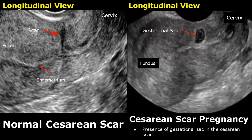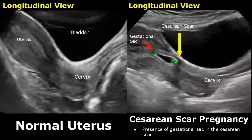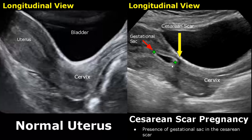Caesarean scar pregnancy is very rare. It is a type of ectopic pregnancy, but it is not an accurate term because the gestational sac is still implanted within the uterus. The gestational sac is present in the caesarean scar. Here is another image of a caesarean scar pregnancy — we can see the embryo very clearly here. This is a transabdominal image of a caesarean scar pregnancy; the gestational sac is seen within the caesarean scar.